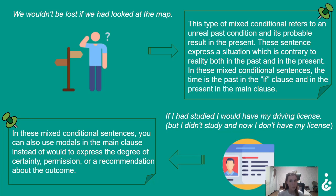In these mixed conditional sentences, the time is in the past in the if clause, and in the present in the main clause. For example: 'If I had studied, I would have my driving license' — but I didn't study and I don't now have my license.